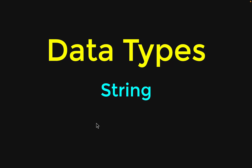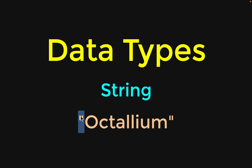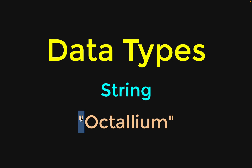The next data type in our series is going to be the string. Strings in Elixir are represented by double quotes, so double quotes with content inside is a valid string. If you use single quotes instead, that means a character list, which is different from a string in Elixir.